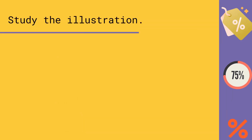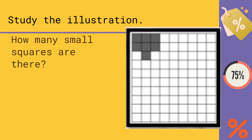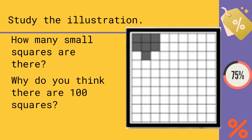Let us study the illustration. If we look at it, there are small squares. How many small squares are there? Counting horizontally and vertically, there are 10 each, so 10 times 10 equals 100 squares. Why are there 100 squares? Because we will visualize the percent — 'percent' means 100, so we have 100 squares.